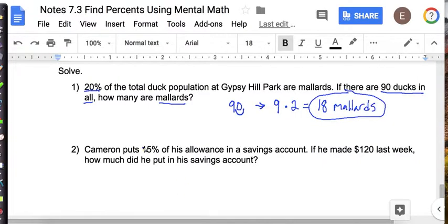Okay, number 2. Cameron puts 15% of his allowance in his savings account. If he made 120 last week, how much did he put into his savings account?